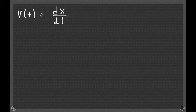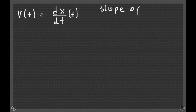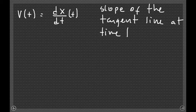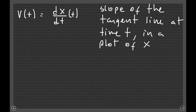To summarize, the velocity at time t of an object—and from now on when we say velocity, we mean the instantaneous velocity—is the derivative with respect to time of the position of the object, evaluated at time t. Graphically, this velocity corresponds to the slope of the tangent line at time t in a plot of position versus time.